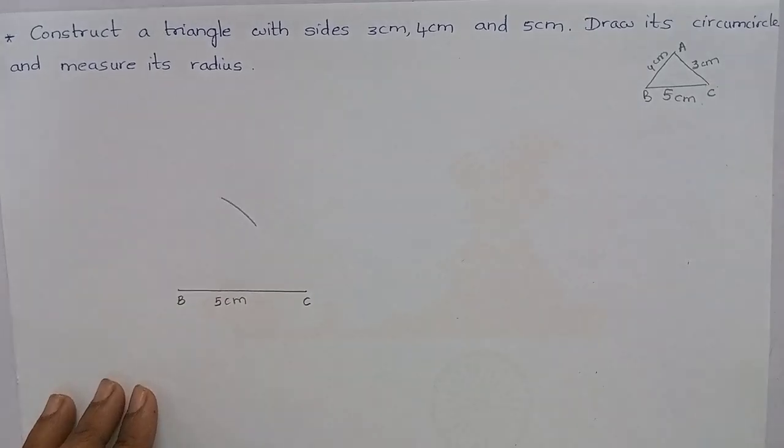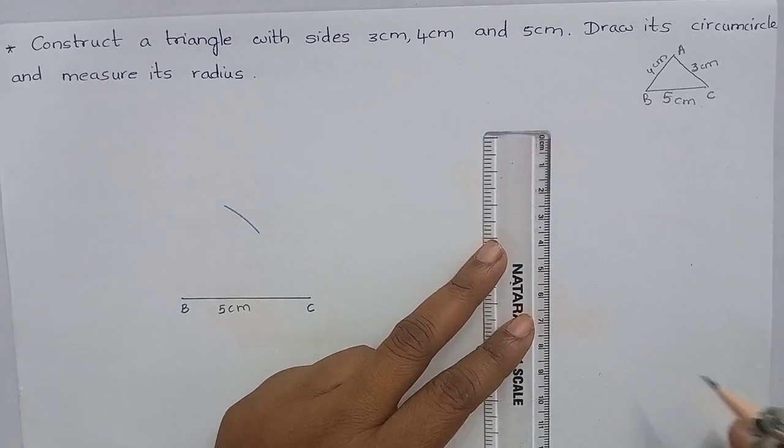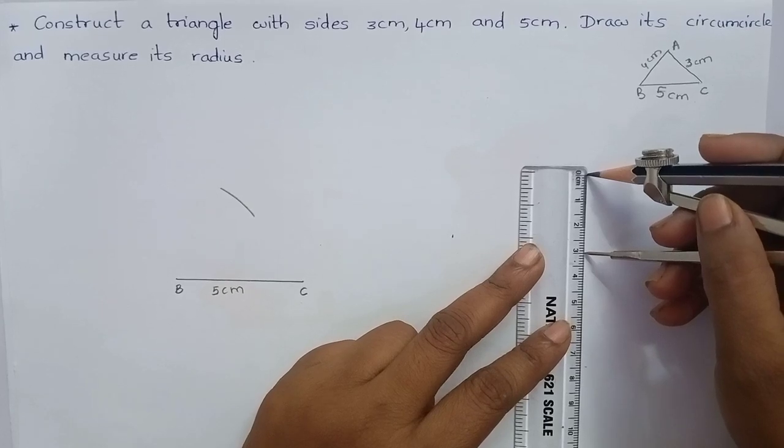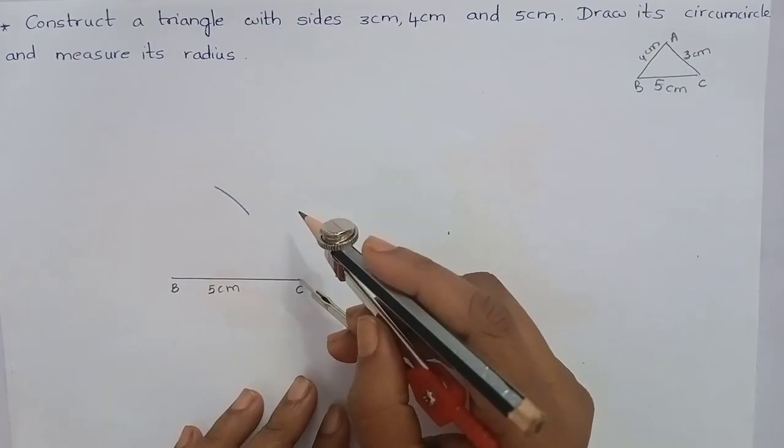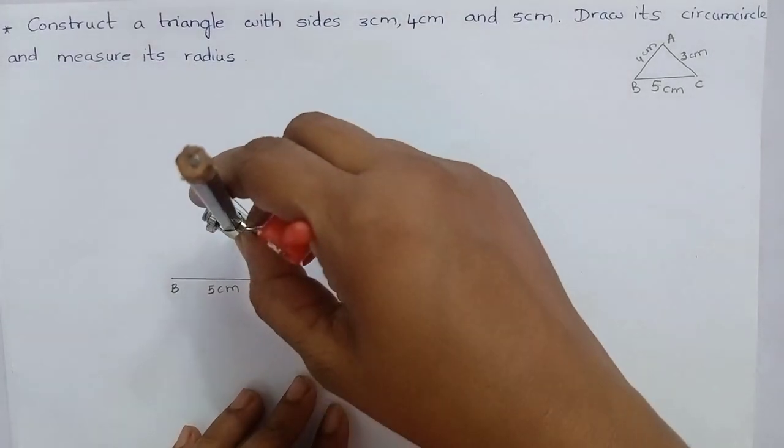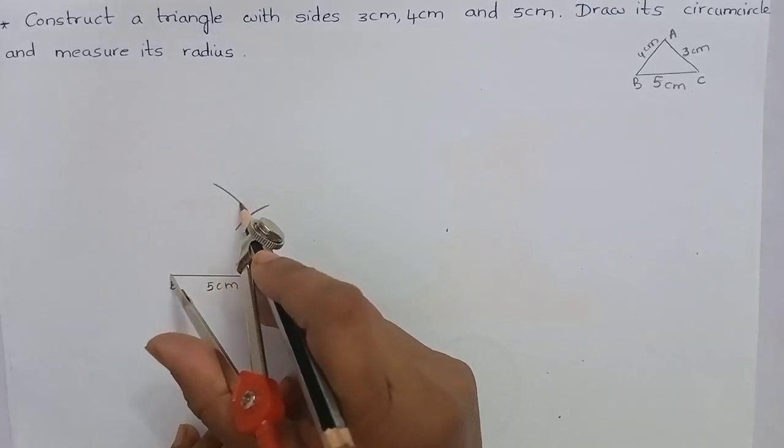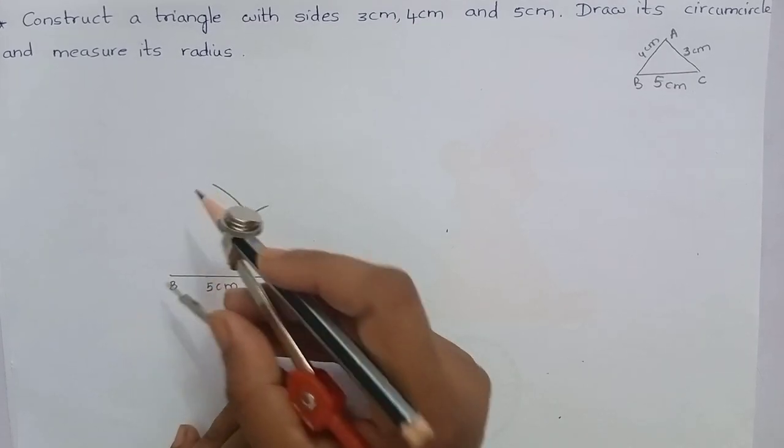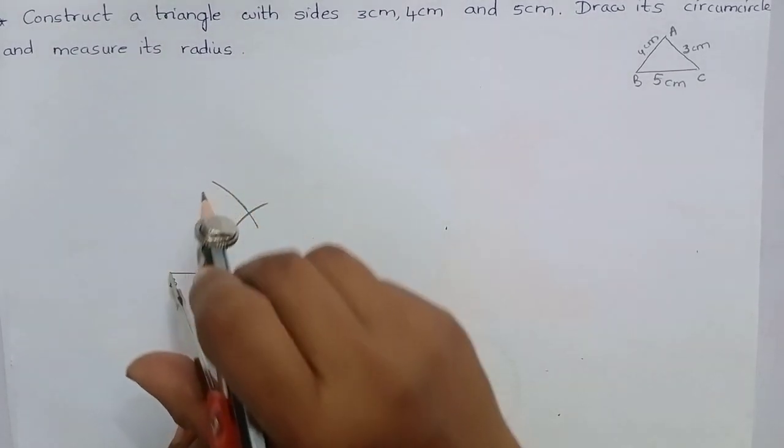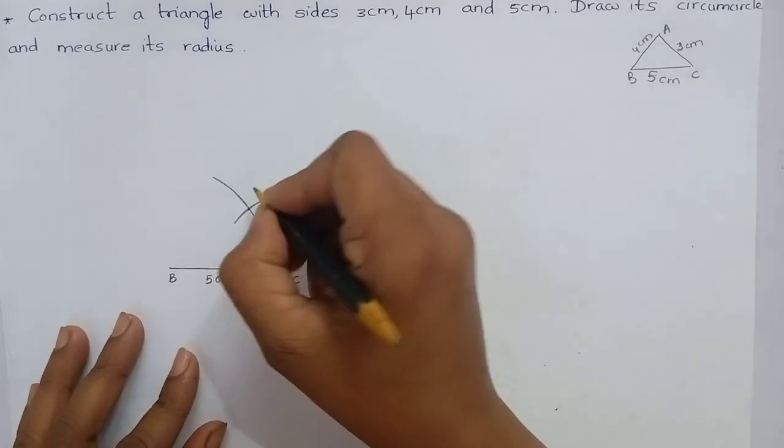AC is 3 cm. By using ruler, mark 3 cm. You can see that it is 3 cm. Mark 3 cm from the point C and cut an arc. Name this point as A.